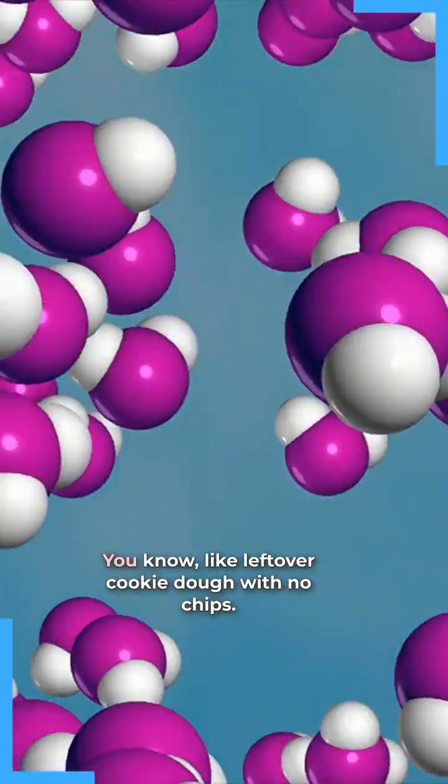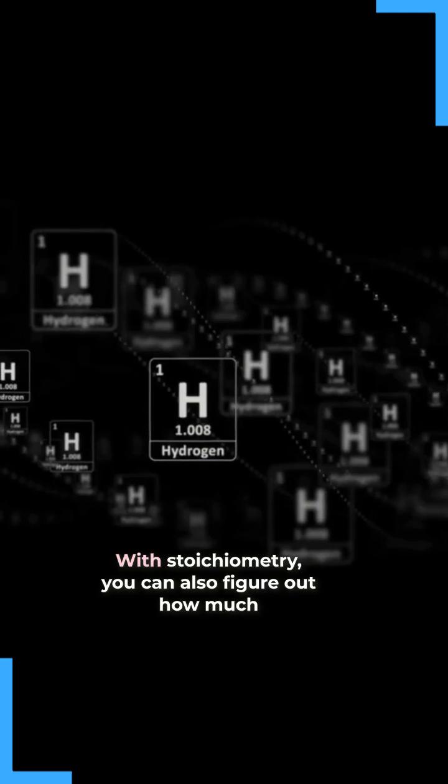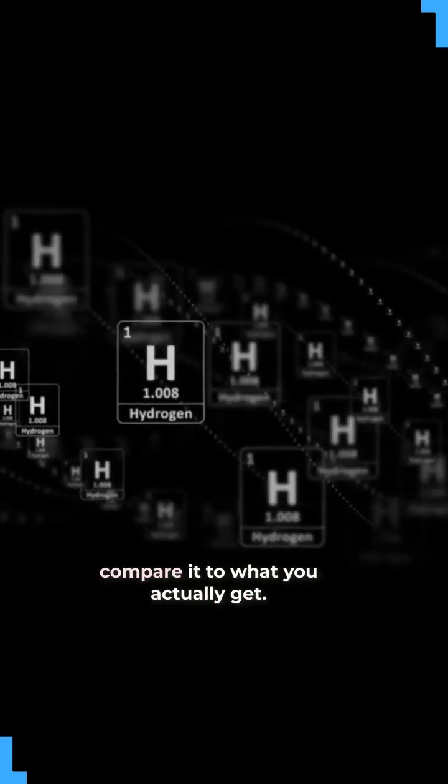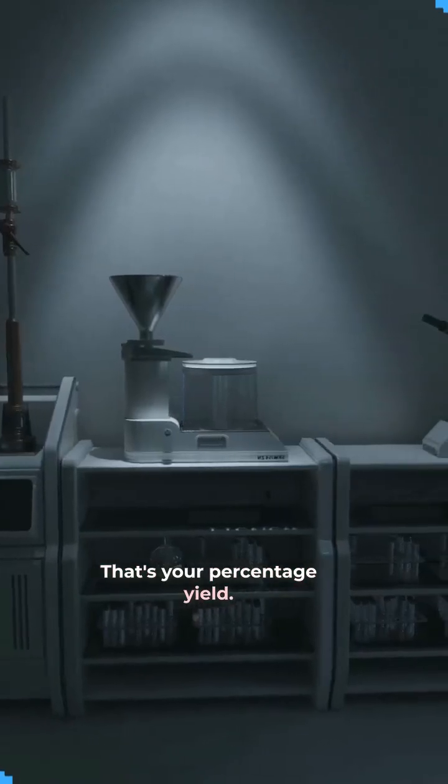With stoichiometry, you can also figure out how much product you should make, called the theoretical yield, and compare it to what you actually get. That's your percentage yield. It's like chemistry's version of a cook-off, and the mole ratios are your secret recipe.